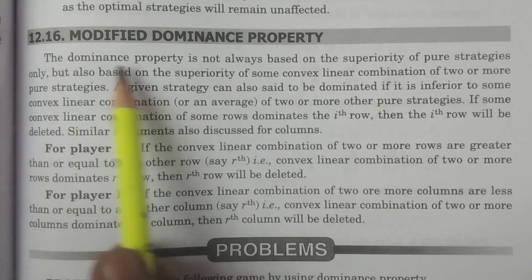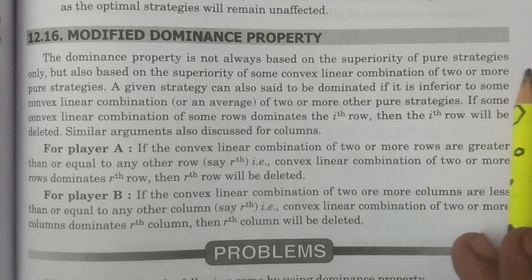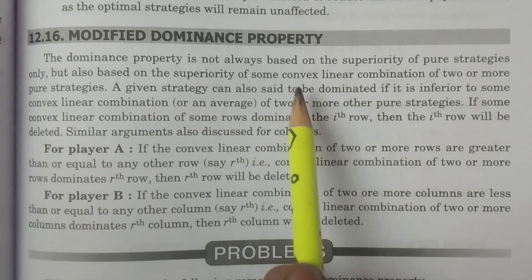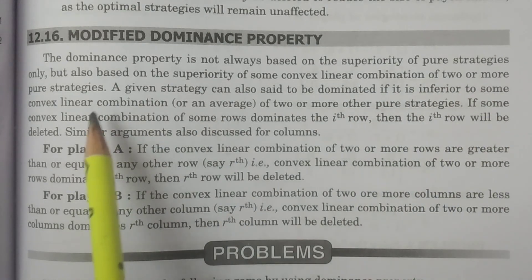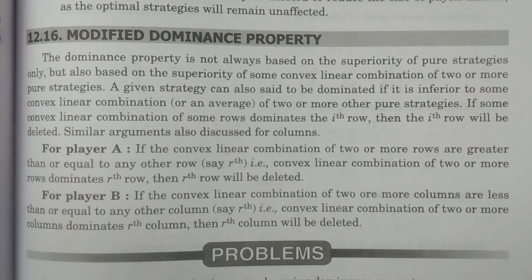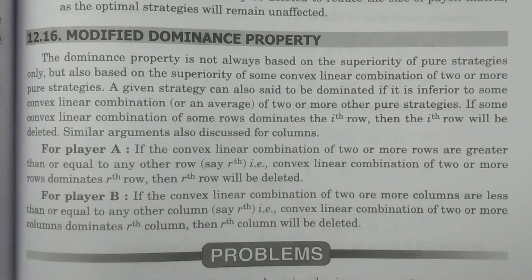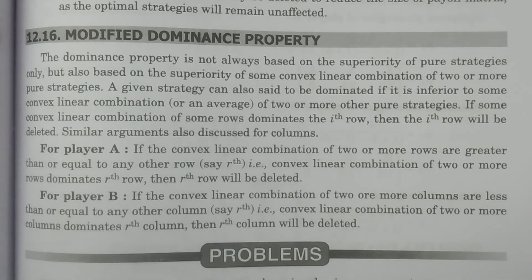The dominance property is not always based on the superiority of pure strategies only, but also based on the superiority of some convex linear combination of two or more pure strategies. Previously we compared one strategy with another — if all the elements in one particular strategy are greater than or equal to all the elements in the other particular strategy.